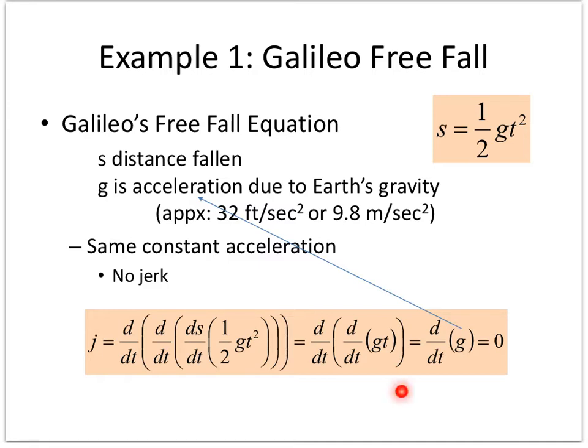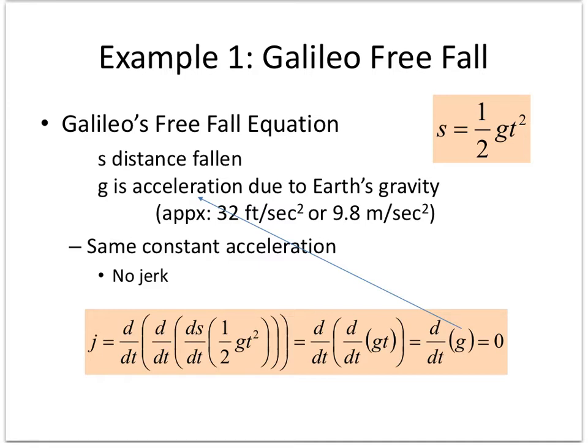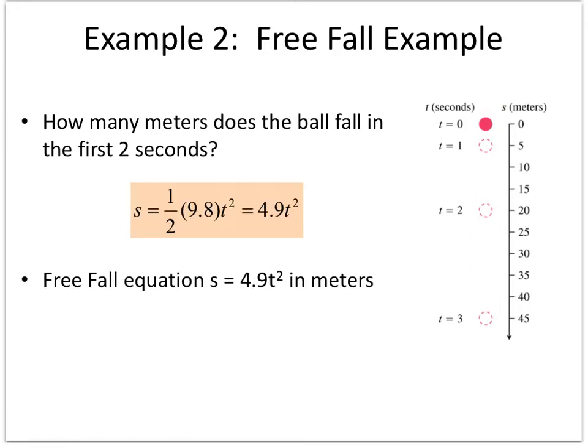How many meters does the ball fall in the first two seconds? So I use the free fall equation in metric — plugging in the metric value of g gives me 4.9t². This is my free fall equation. You might panic in a test and think it's calculus so you must take a derivative, but if you just want the distance, just plug in the values.